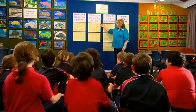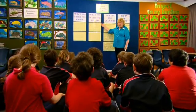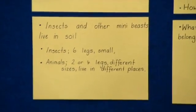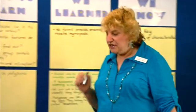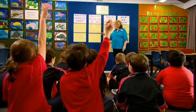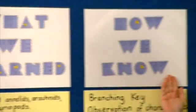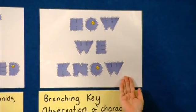Using the TWLH chart, teachers reinforce the learning that has taken place. We didn't know any names of the groups so we thought there would just be bugs and insects. Students really need to look back at what they thought they knew at the beginning, the learning that they've done, the questions they had, and linking the learning with the evidence that they've collected.